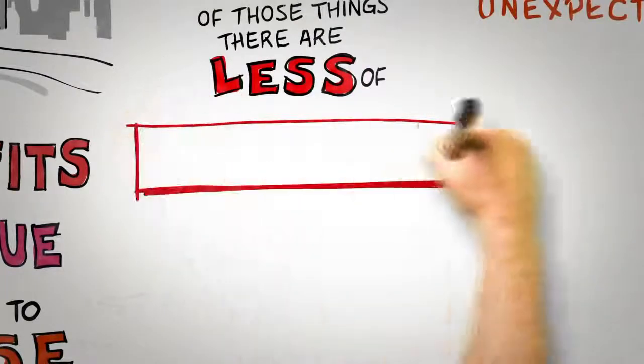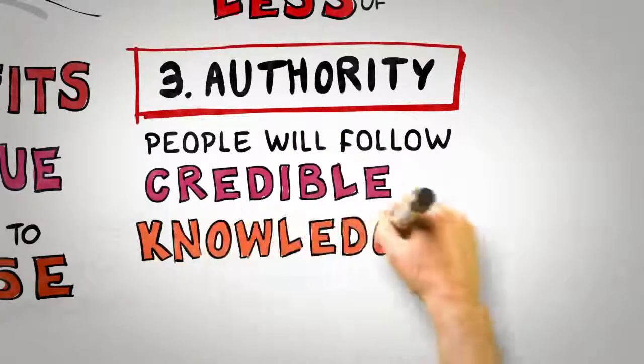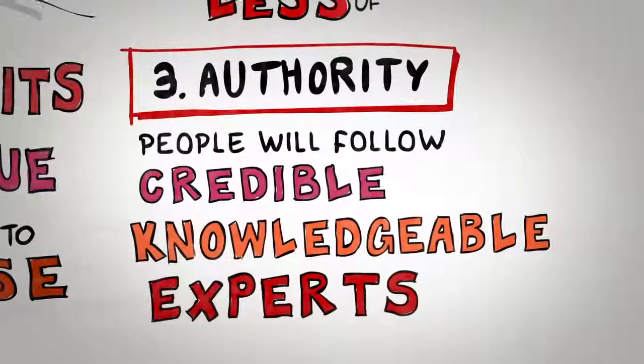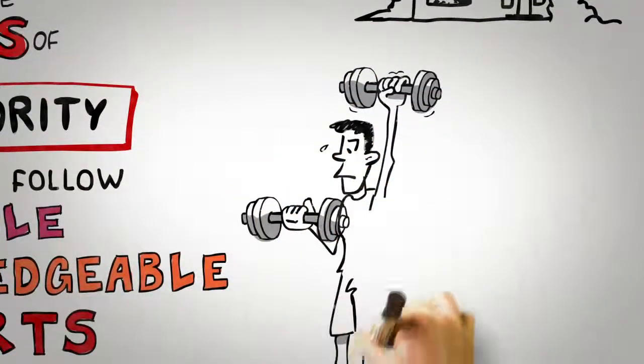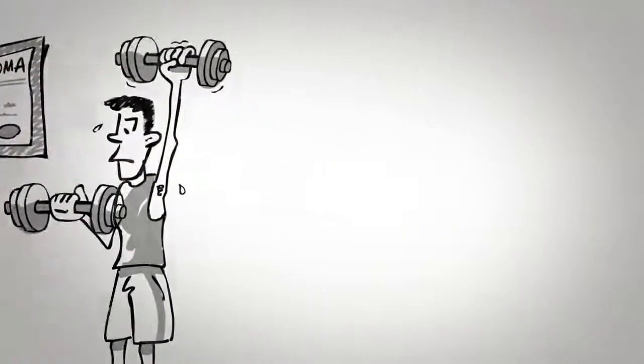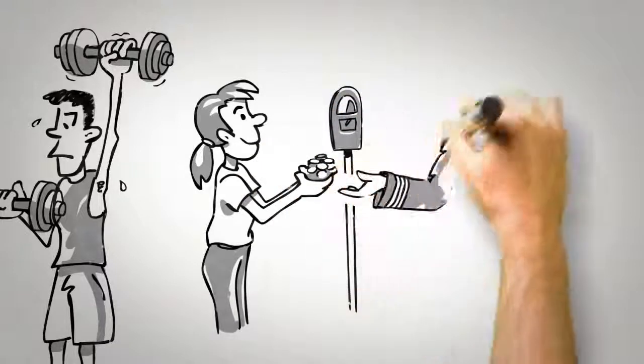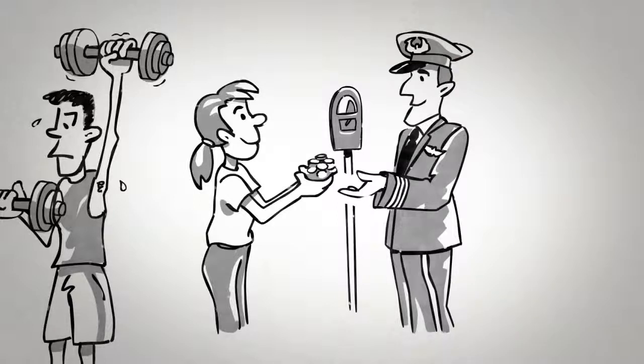Our third principle of influence is the principle of authority, the idea that people follow the lead of credible, knowledgeable experts. Physiotherapists, for example, are able to persuade more of their patients to comply with recommended exercise programs if they display their medical diplomas on the walls of their consulting rooms. People are more likely to give change for a parking meter to a complete stranger if that requester wears a uniform rather than casual clothes. What the science is telling us is that it's important to signal to others what makes you a credible, knowledgeable authority before you make your influence attempt.